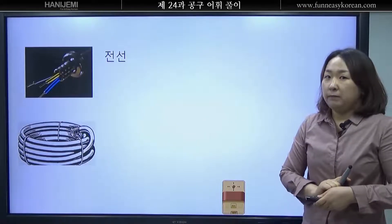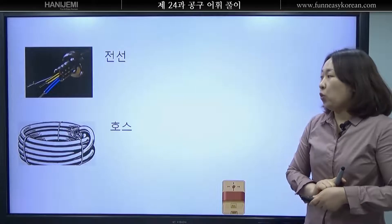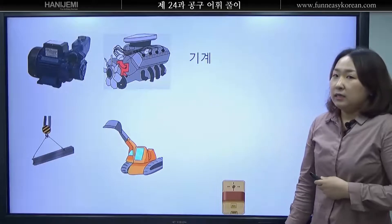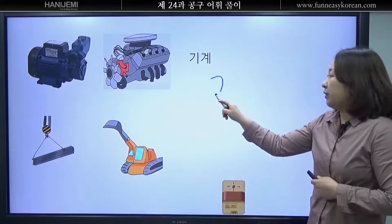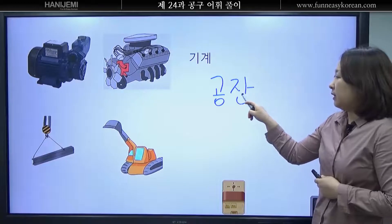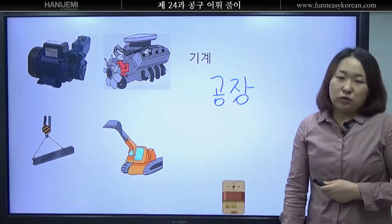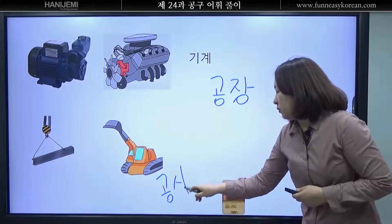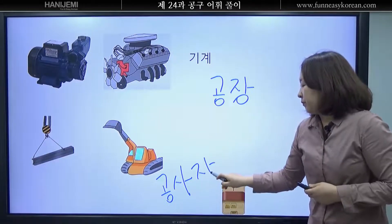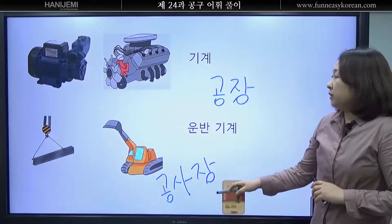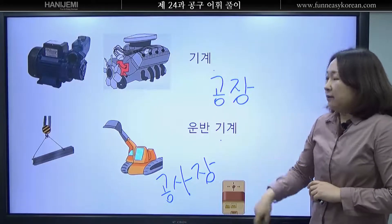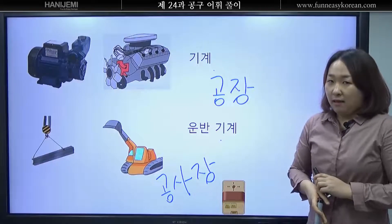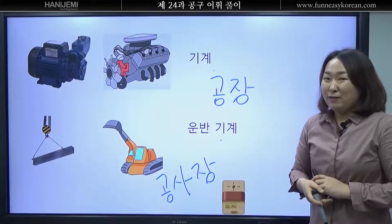여러분 이것은 무엇입니까? 전선입니다. 아래에 있는 그림은 호스입니다. 여러분 이것은 기계. 기계를 어디에서 많이 볼 수 있을까요? 네 공장에서 많이 볼 수 있습니다. 이거는 어디에서 많이 볼 수 있을까요? 네 공사장에서 많이 볼 수 있습니다. 공사장에서 물건을 운반하는 기계를 운반기계라고 하는 거 알고 있어야 합니다.